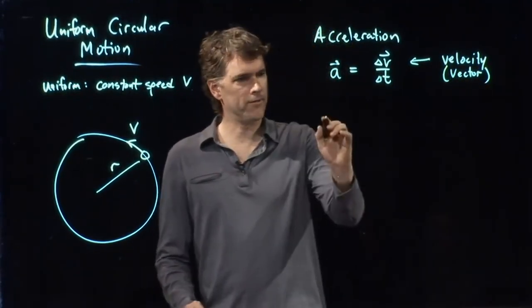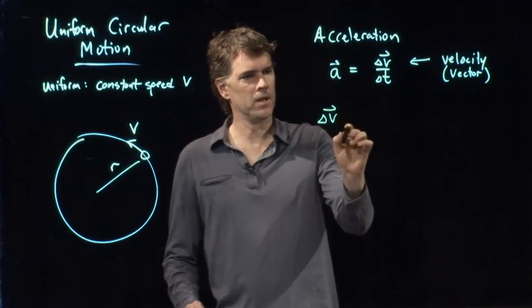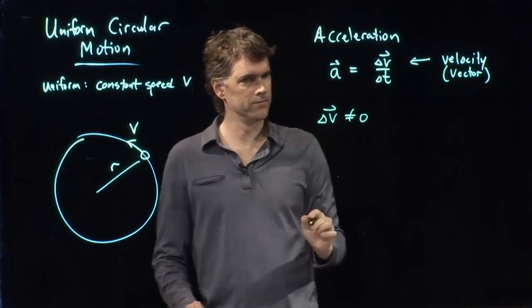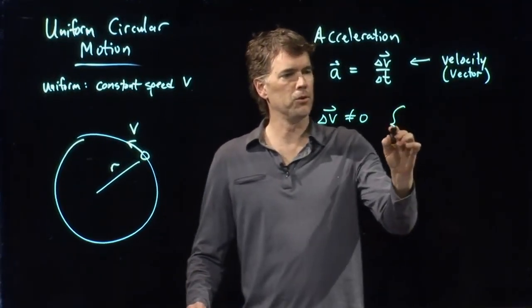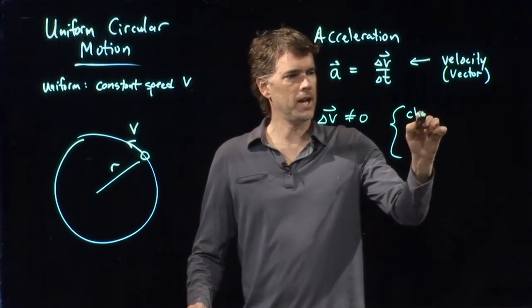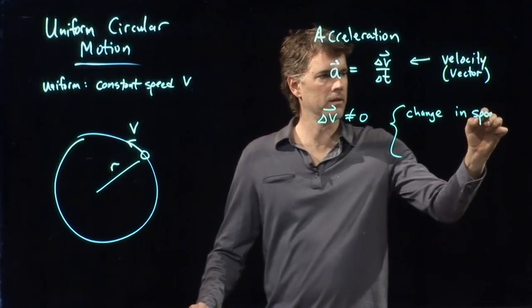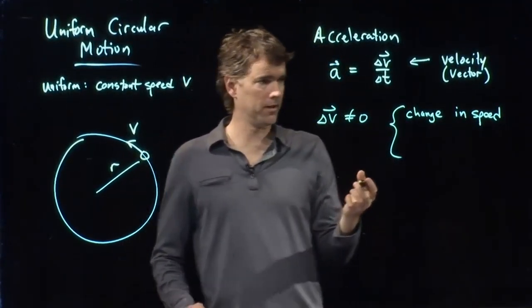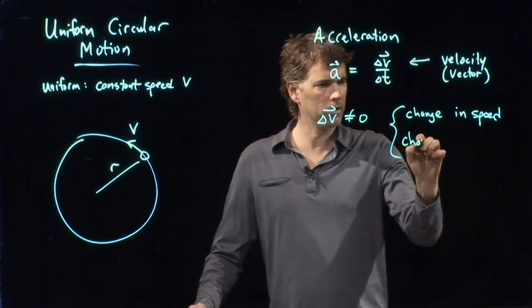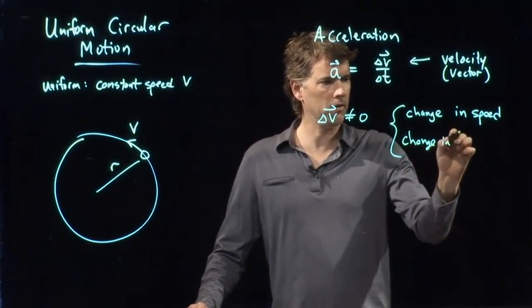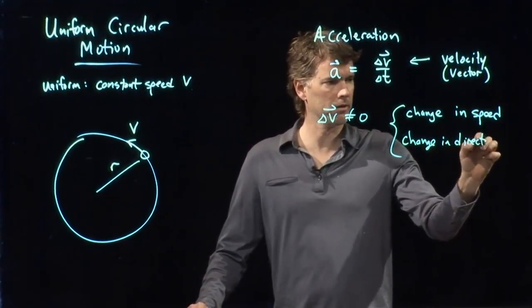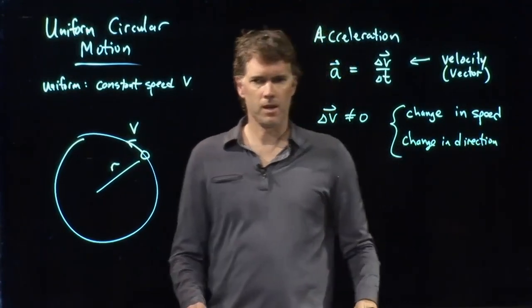So if you have a delta v that's non-zero, that could be due to change in speed, which is the magnitude of velocity, or it could be change in direction.